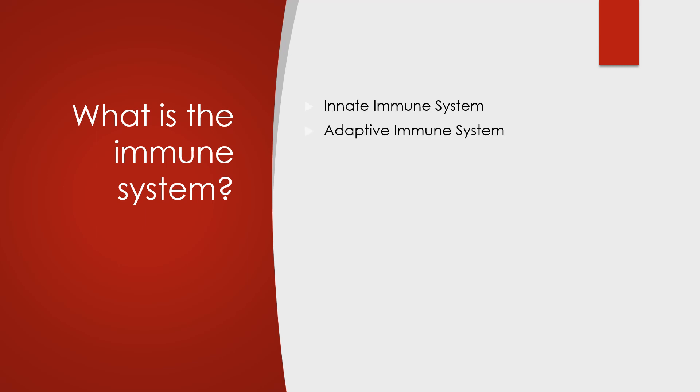The immune system can be divided into two main parts, the innate immune system, which is present in all animals, and the adaptive immune system, which is only present in vertebrates.